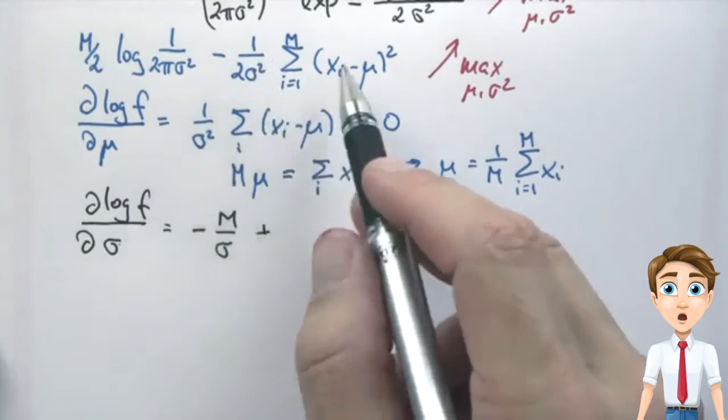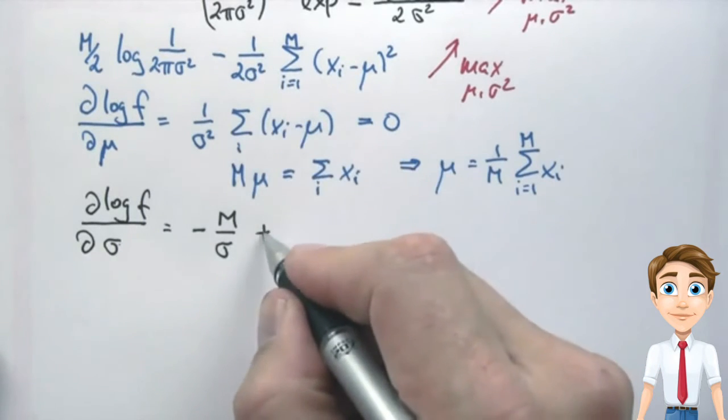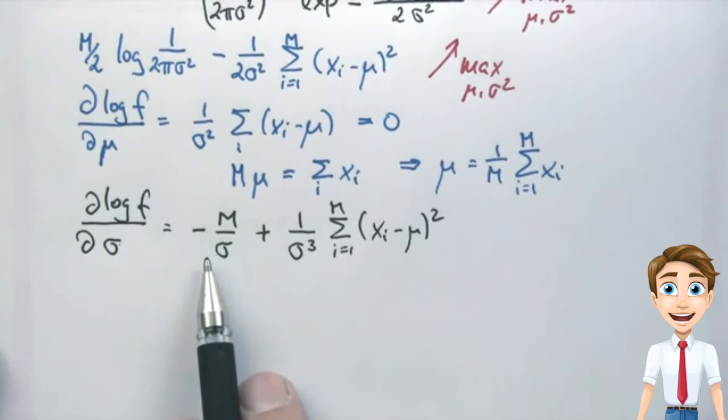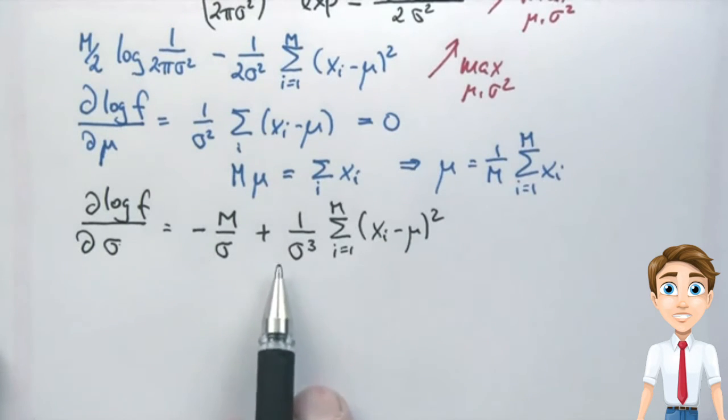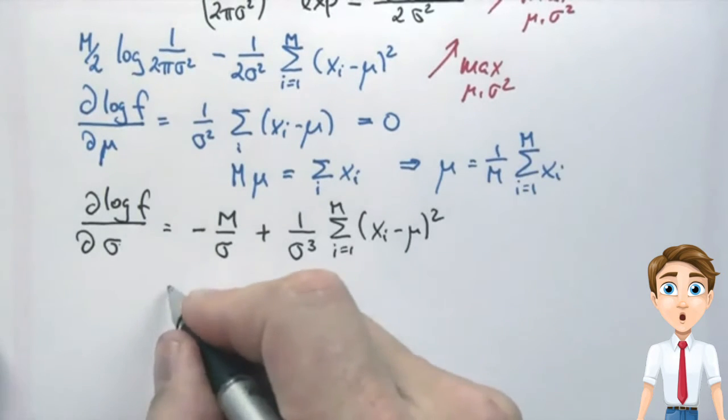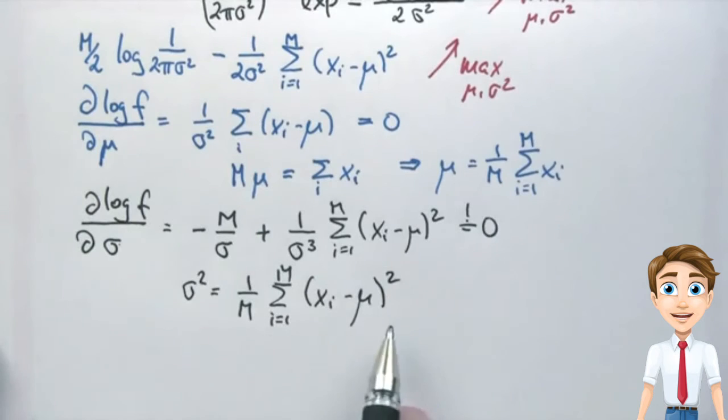And this term over here changes signs but becomes the following. And again, we move this to the left side, multiply by sigma cubed, and divide by m. So we get the following results over here.